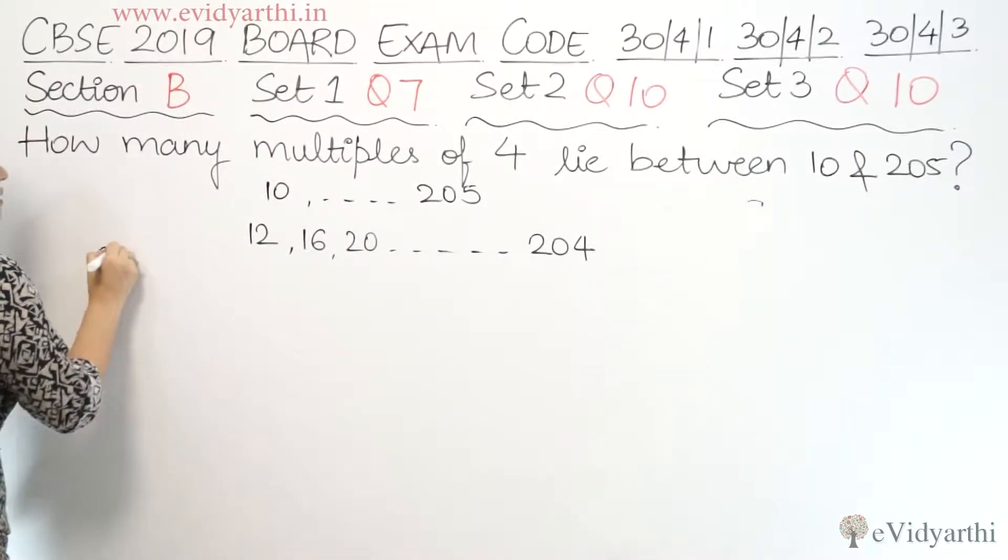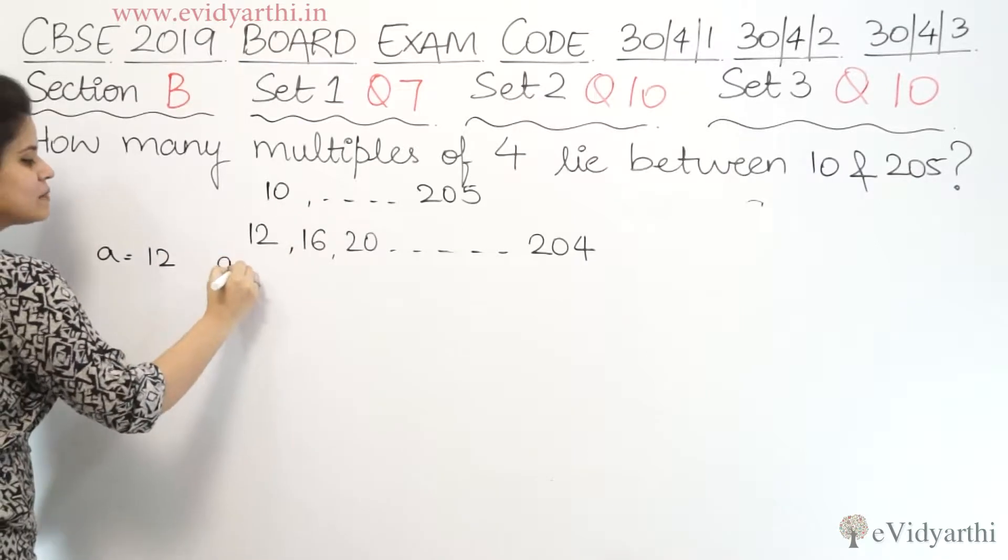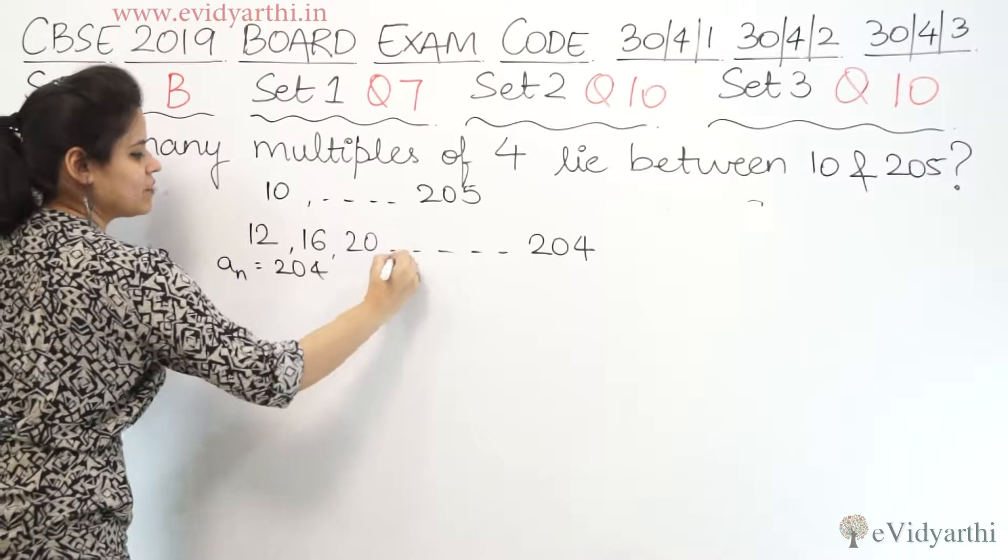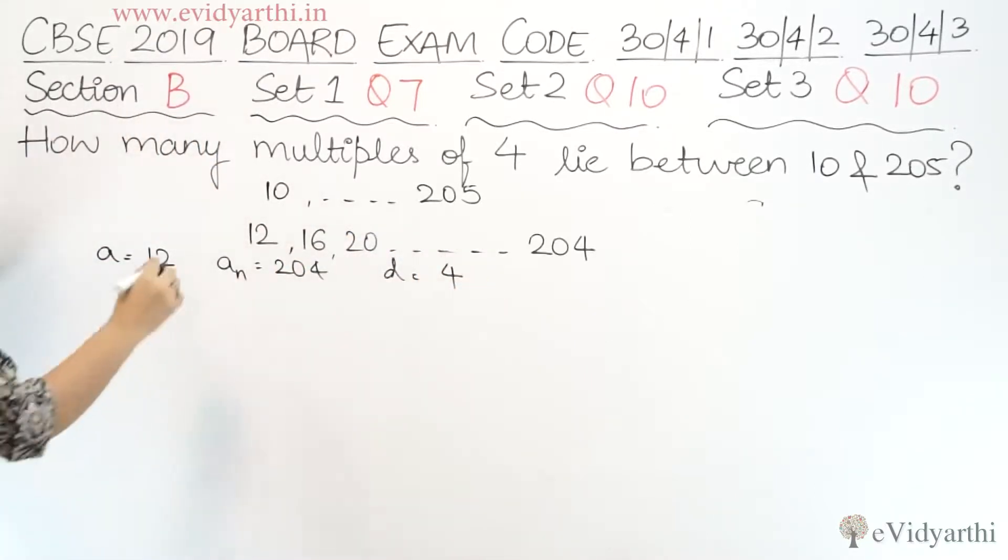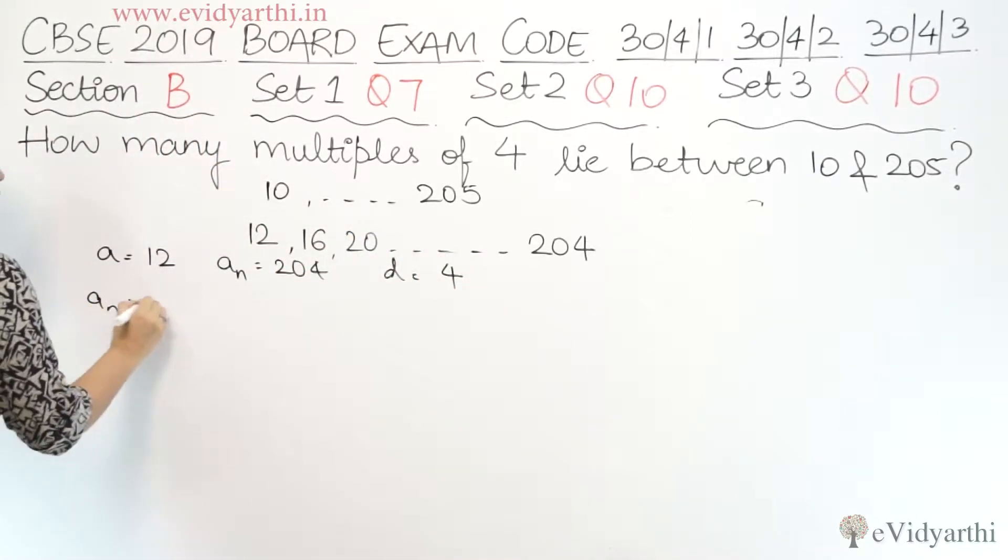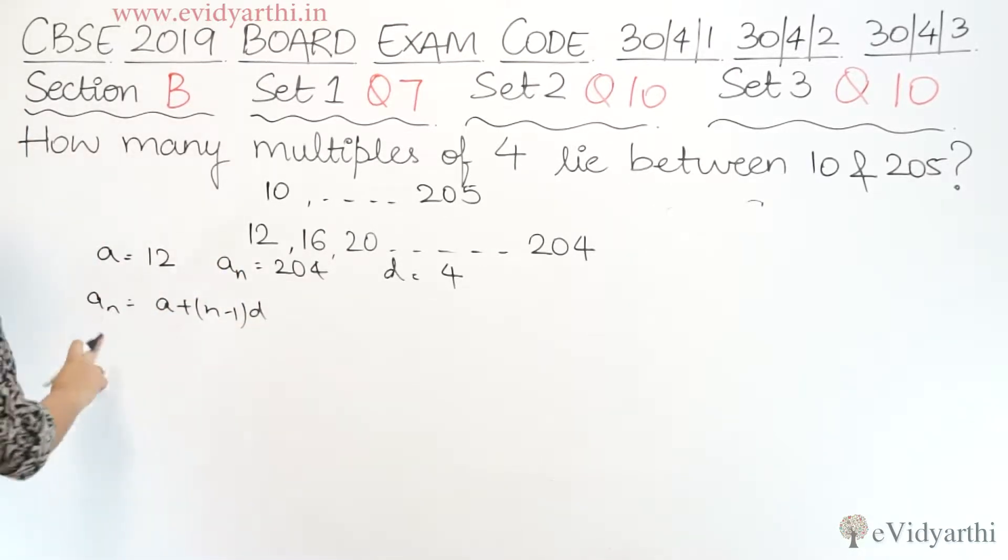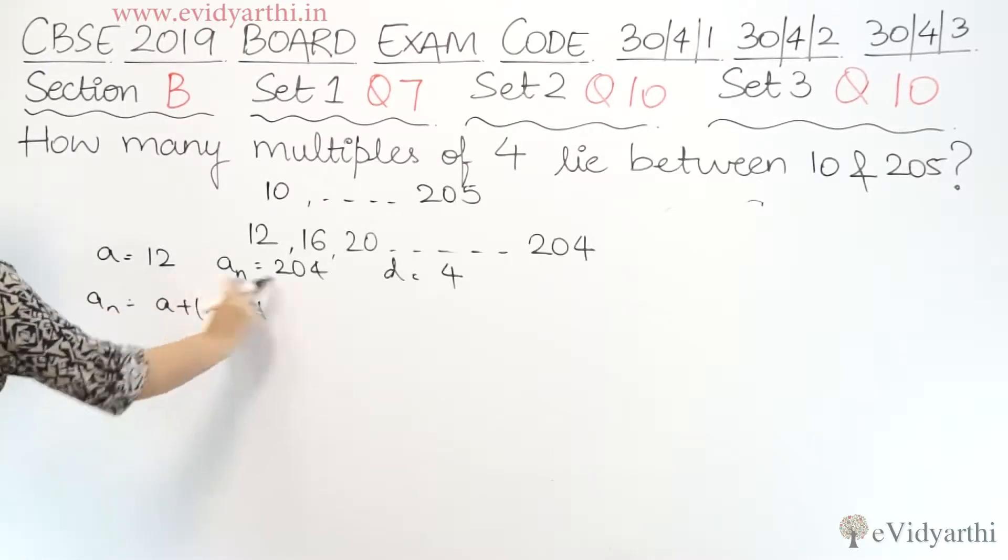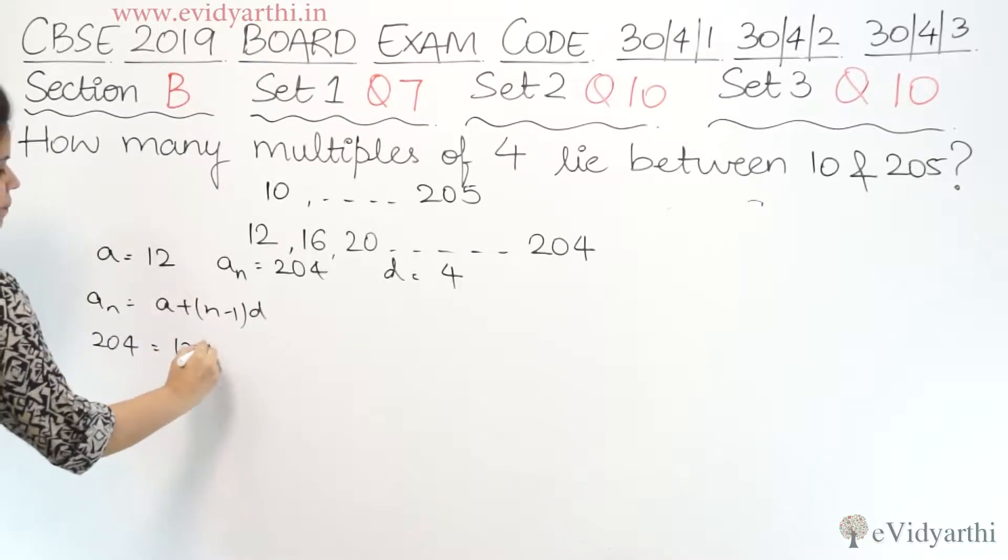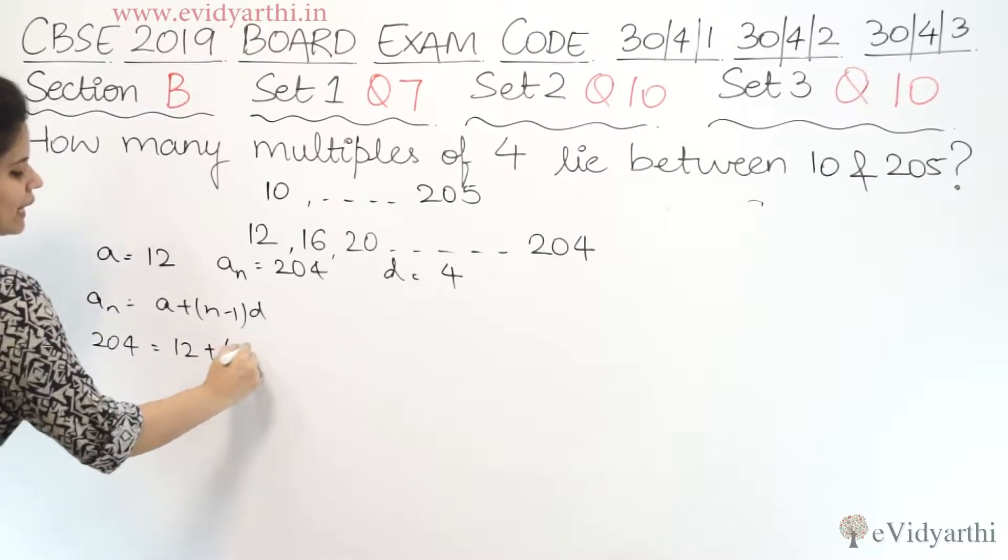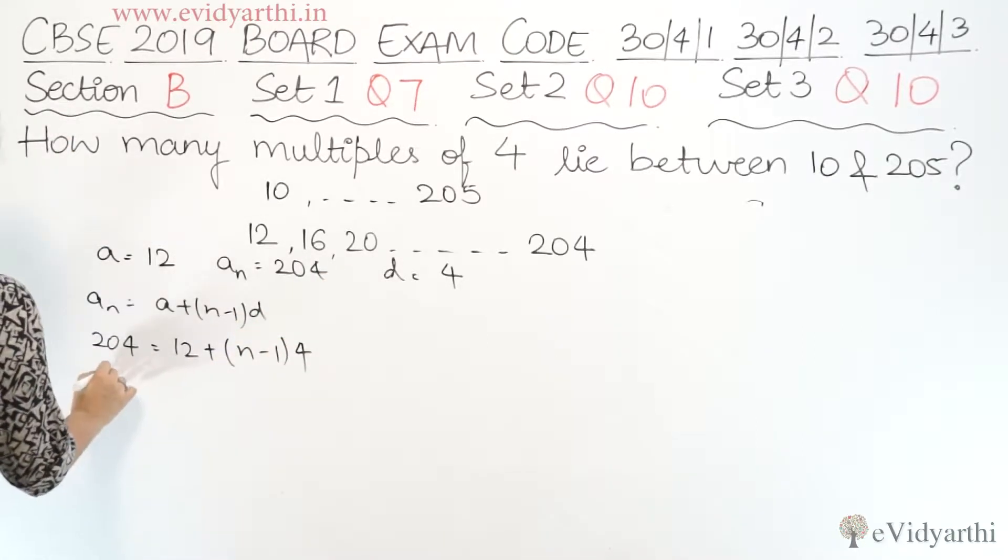So the first term of AP is 12. Last term is 204. Common difference is 4. So a_n is a plus n minus 1 times d. Let's put the values. a_n is 204 equals to a which is 12 plus n minus 1, and d is 4. So let's solve this.